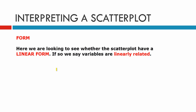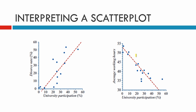The next thing we look at is the form. We need to see whether it has a linear form — if so, we say the variables are linearly related. Here we have two graphs: we can draw a straight line between the dots, so these are linearly related. The first is positive and the second is a negative graph, and again it is linearly related.